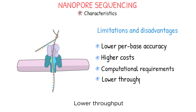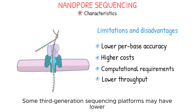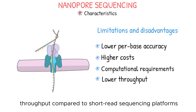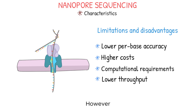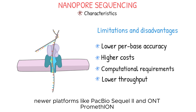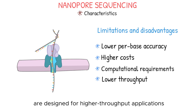Lower throughput: some third-generation sequencing platforms may have lower throughput compared to short-read sequencing platforms, which can be a limitation for large-scale projects. However, newer platforms like PacBio Sequel 2 and ONT PromethION are designed for higher throughput applications.